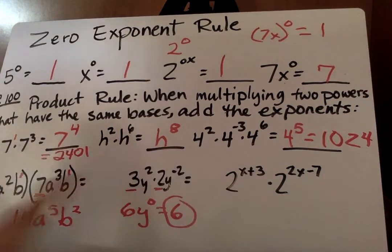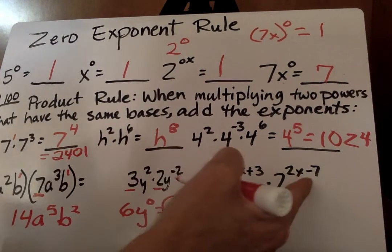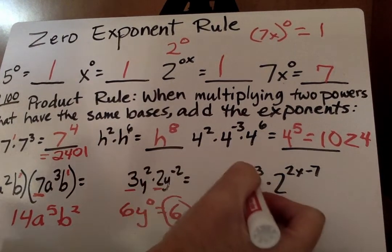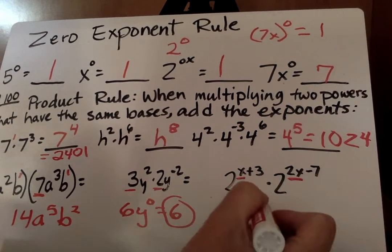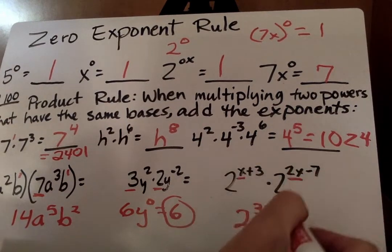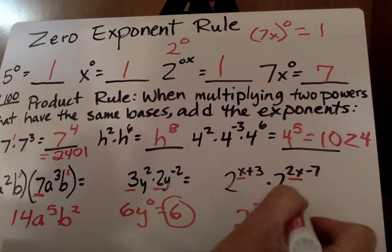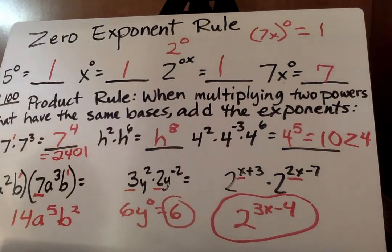Then our last one over here is a little bit of a trickster also. We're going to add the exponents because the bases are the same. So we're adding x and 2x. We keep the base the same. That's 3x. And then plus 3 minus 7, minus 4. And there you have your answer.